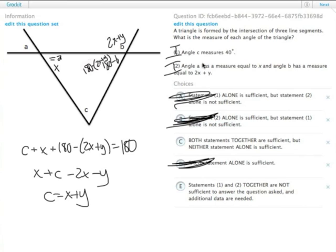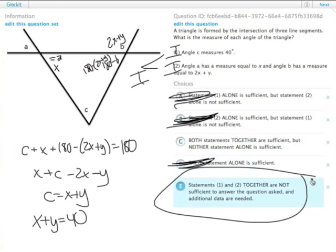Even in conjunction, knowing that C equals 40 means X plus Y equals 40, but without knowing what those numbers are, there are multiple solutions. Even together, the two statements are insufficient. Answer choice E.